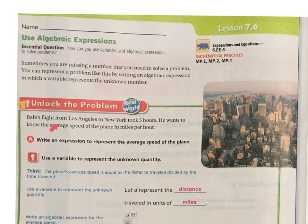Let's unlock the problem. Raf's flight from Los Angeles to New York took 5 hours. He wants to know the average speed of the plane in miles per hour. Write an expression to represent the average speed of the plane. Use the variable to represent the unknown quantity.